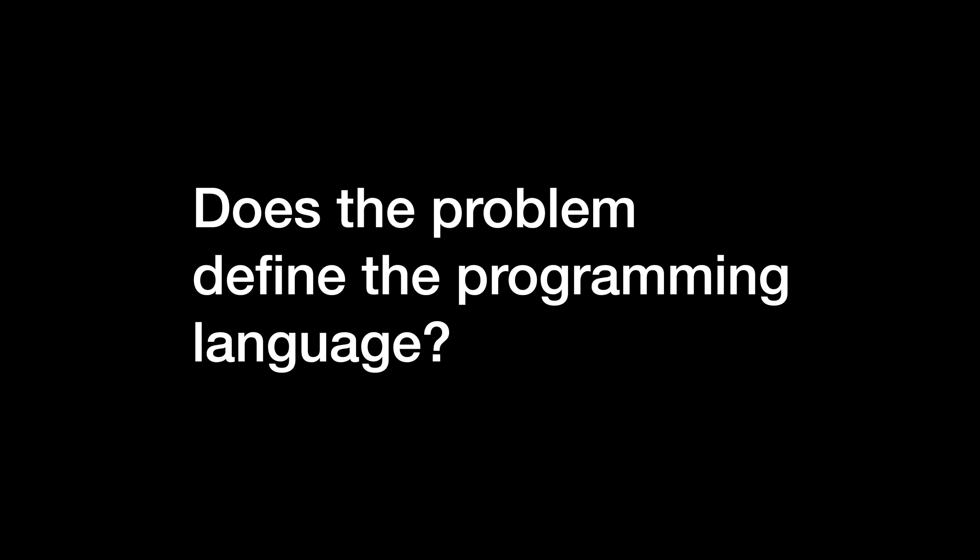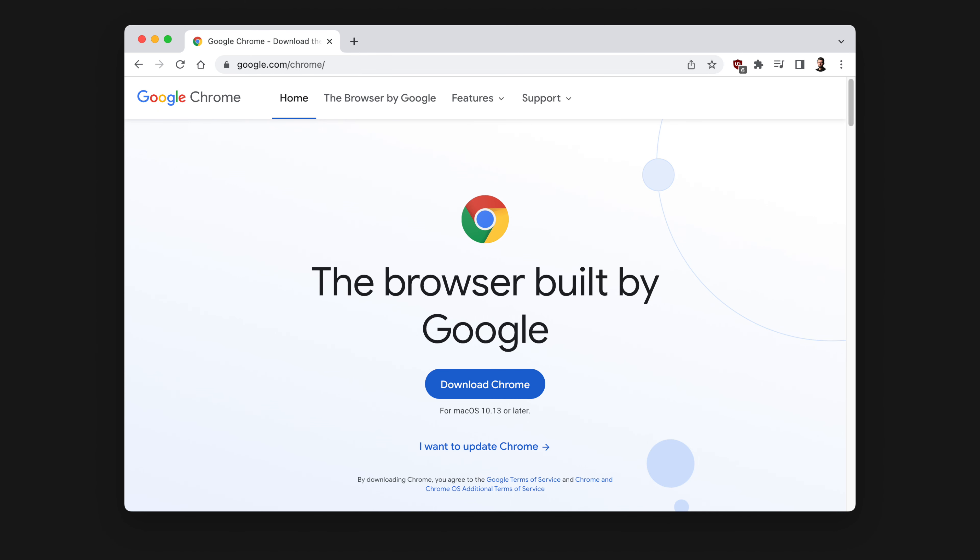You can, for example, ask: does the problem define the programming language? For some problems, there are not many choices. For example, if you want to develop an application that runs in the browser, you will probably choose JavaScript. How popular is the language? How long does it exist? Most cutting-edge technologies are risky for your project, as you don't know yet if there will be a big enough community, someone maintaining the language, or if you can find engineers for that in the future. Most of the time, it is better to pick the proven, but maybe more boring, languages.